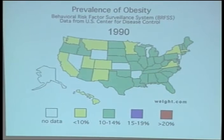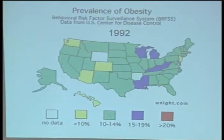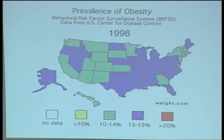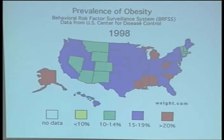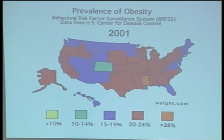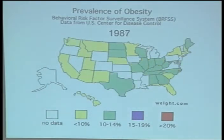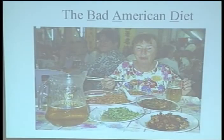The darker the color, the higher the rate. As you can see, there are very clear geographic and spatial patterns, and clear patterns over time. The epidemic has just taken off from one year to another — it's astonishing.